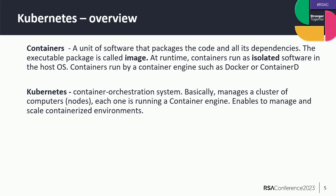Before we talk about lateral movements in Kubernetes, let's talk for a moment about Kubernetes, and even before that, let's talk about containers. Containers are a unit of software that packages your code, your application, and all of its dependencies, so you can run it everywhere without worrying about dependencies. The executable package is called an image, and at runtime it becomes a container that is running isolated from other containers. You can think of it like an executable and a process.